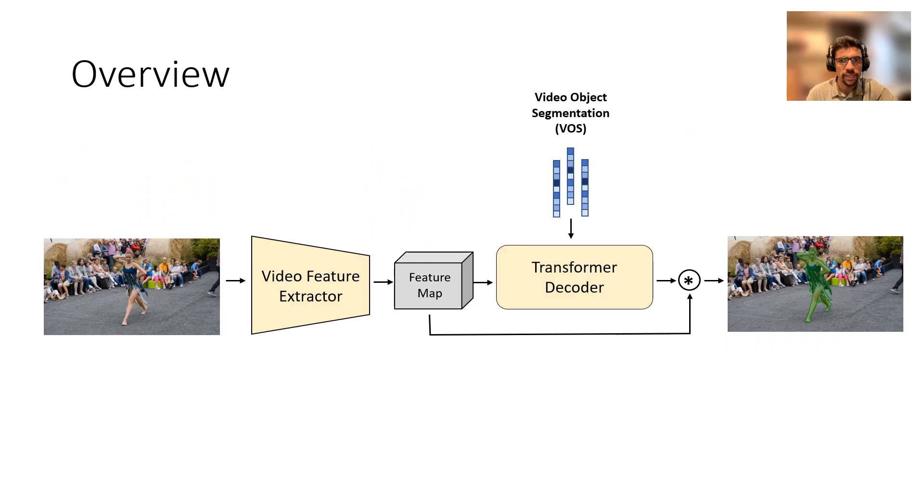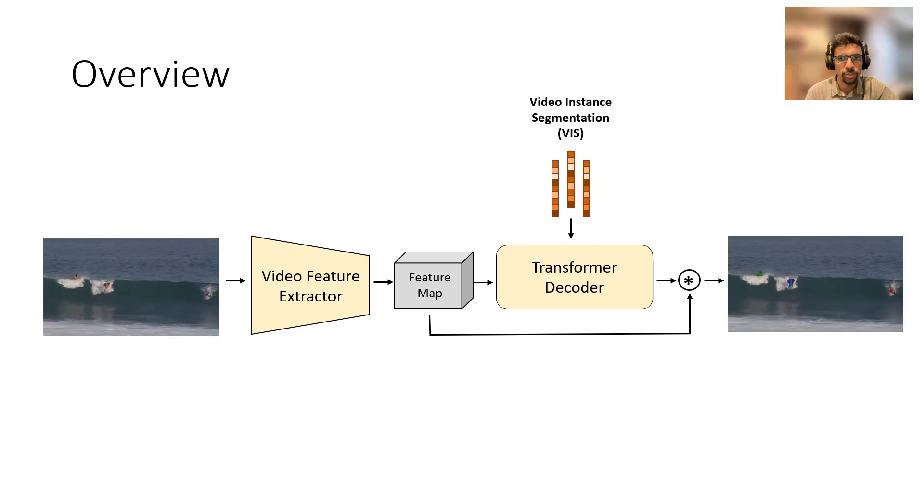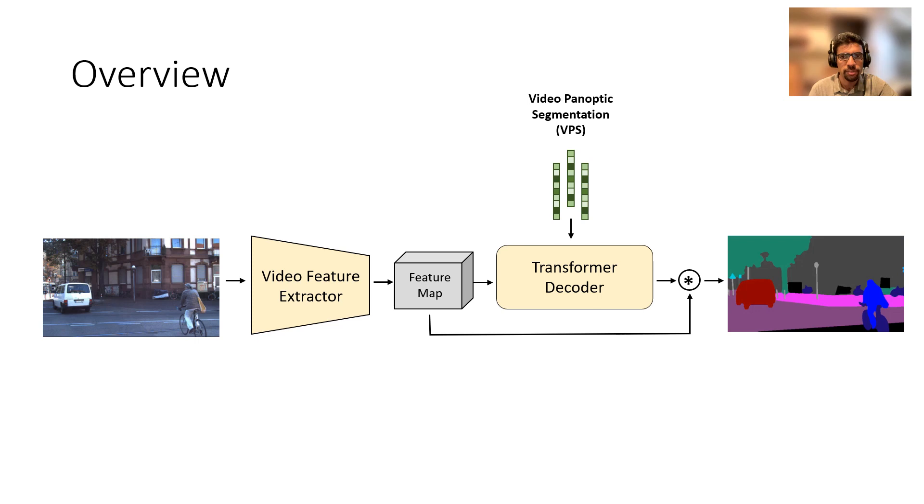The architecture mainly contains a video feature extractor and a transformer decoder. We designed the network to be task agnostic so it can be applied to multiple tasks by simply hot swapping the set of input queries at runtime.